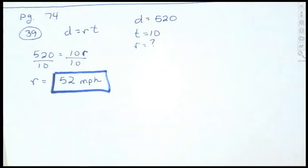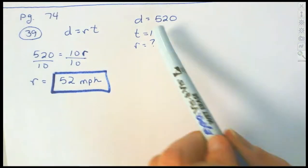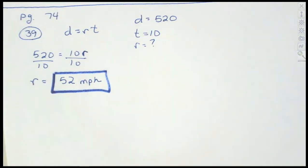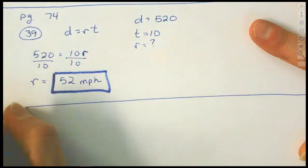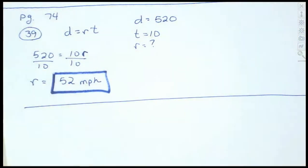If your distance had been in meters and your time in seconds, what would the unit be? Meters per second. It's the distance divided by the time — that's your rate. Rate is always a ratio like that. These are much simpler than the other components of this section.